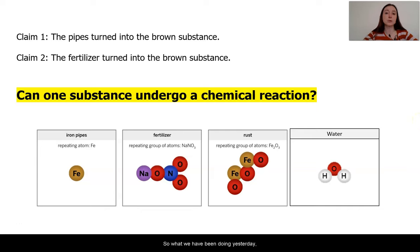So what we have been doing yesterday in our lesson and in the digital model was mixing two different substances and seeing if they can make something new, which definitely was some of what our claims were. Lots of people were thinking that the fertilizer and the iron pipes had a reaction or combined in some way. Some people were thinking that it was the iron pipes and the water. But we also have these questions about could the pipes on their own turn into the rust or the fertilizer on its own turn into the brown substance?